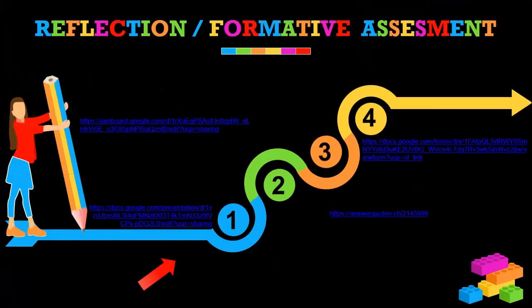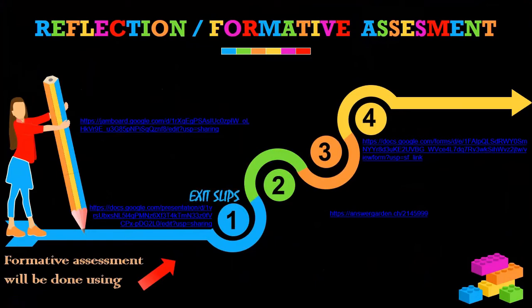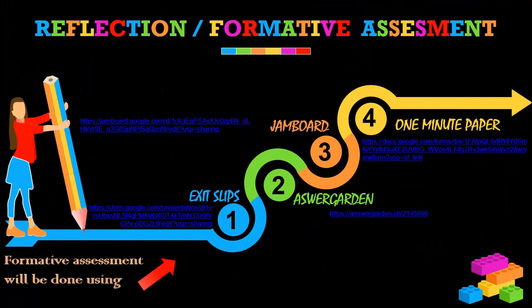For the reflection of formative assessment: formative assessment will be done using Exit Slip for Group 1, Answer Garden for Group 2, Jamboard for Group 3, and One Minute Paper for Group 4. From that, we will get correct feedback. Let's move on to the exit slip.